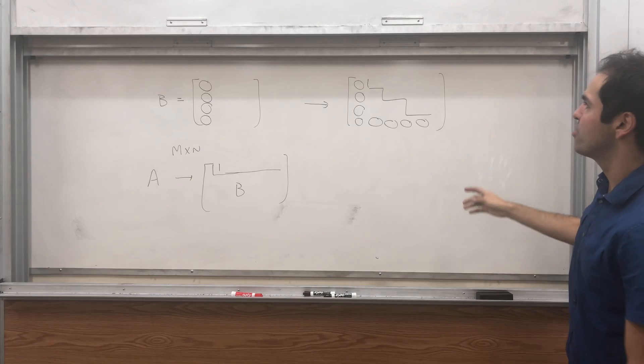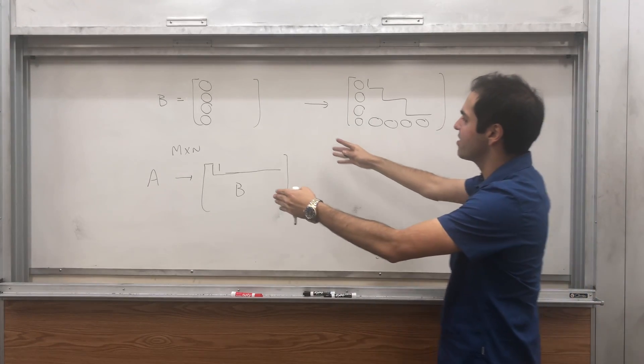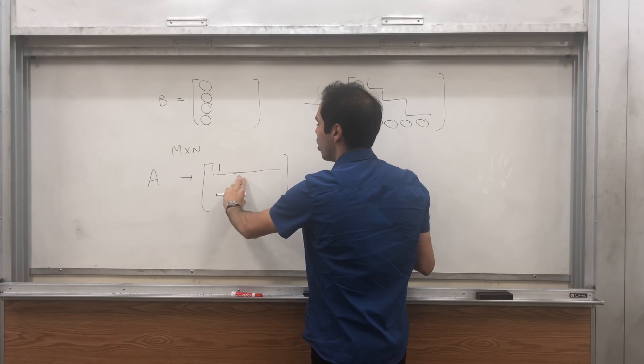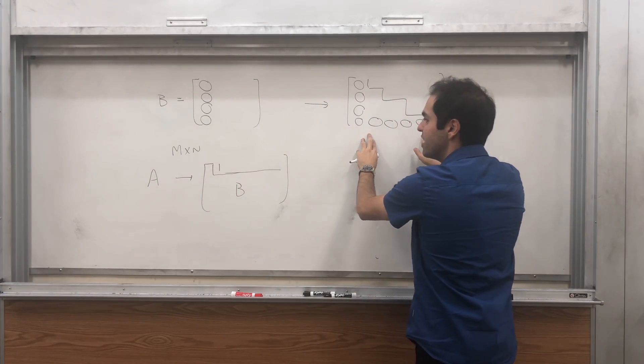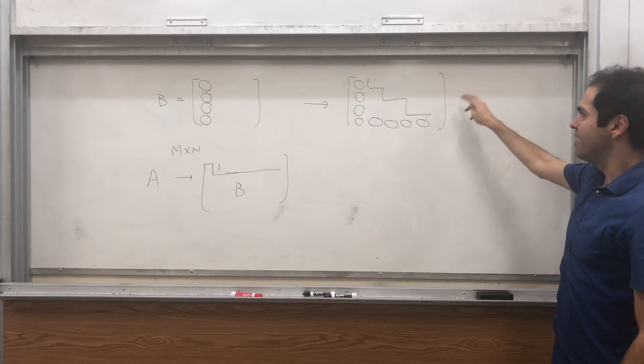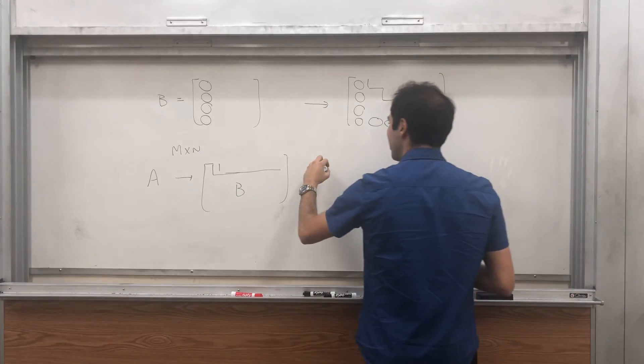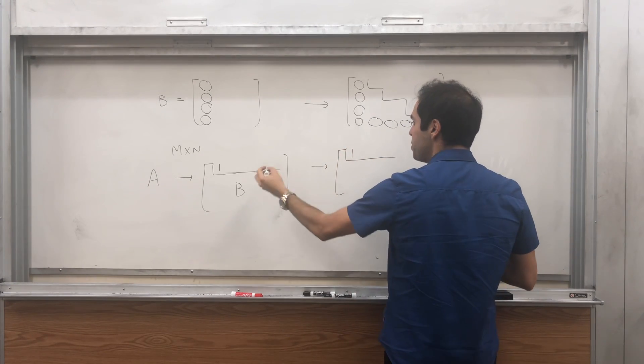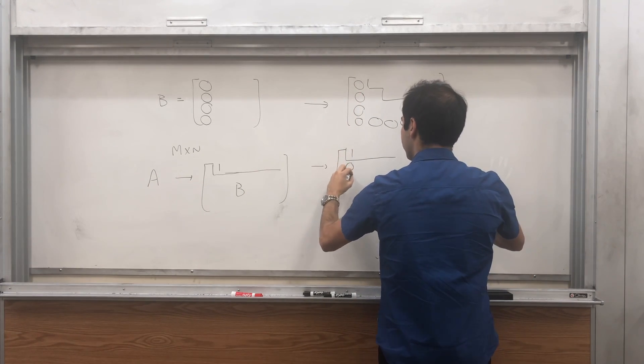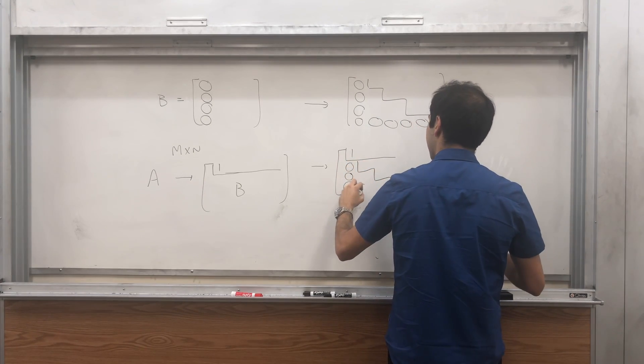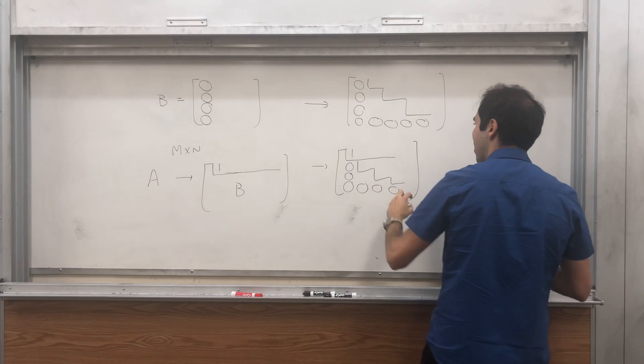And also here's the thing. So B is a smaller matrix, but you can show that the same process that row reduces B to this matrix, row reduces this whole matrix to this matrix. So essentially what A looks like is just one, and then B, which is a bunch of zeros, and then something triangular. Like everything zero is at the bottom.